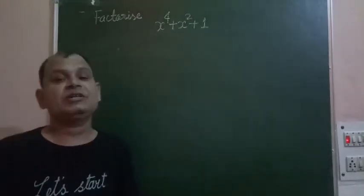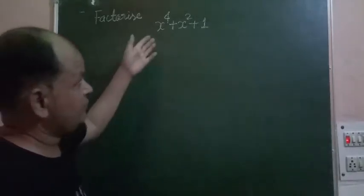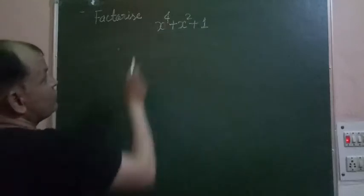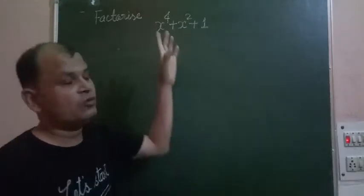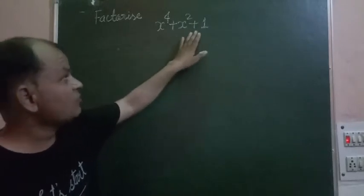The expression is x to the power of 4 plus x squared plus 1. This is a polynomial which has 3 terms, so it's a trinomial. Its highest power is 4, or degree is 4.